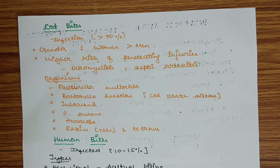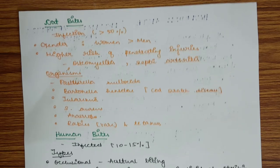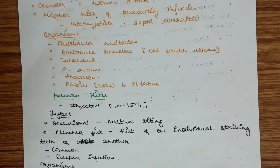Cat bites: infection is less common than dog bites, but infection is more in cat bites, accounting for more than 50% of bites being infectious. Gender: more common in women than men. Higher risk of penetrating injuries with cat bite infections such as osteomyelitis and septic arthritis. Organisms include Pasteurella multocida, Bartonella henselae, tularemia, Staphylococcus aureus, and anaerobes. Can cause rabies and tetanus, though these are rare manifestations.